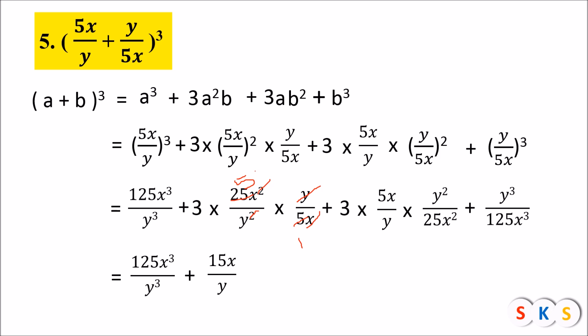Completing the cancellation for the third term: 3 × (5x/y) × (y²/25x²) = 3y/5x. And (y/5x)³ = y³/125x³. Therefore, (5x/y + y/5x)³ = 125x³/y³ + 15x/y + 3y/5x + y³/125x³.